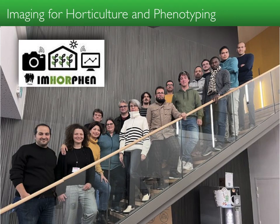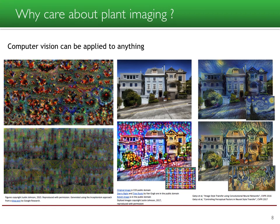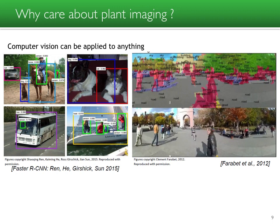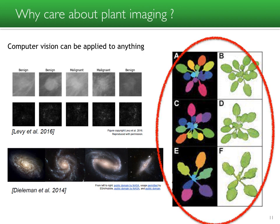Our team, titled 'Imaging for Horticulture and Phenotyping,' is composed of statisticians, modelers, computer scientists, and physicists. You may wonder why, as non-plant biologists, we care about plant imaging. Computer vision can be applied to anything — funny stuff like creative art, but also the monitoring of populations, the observation of our planet, or the universe. We decided to focus on the monitoring of populations of plants.